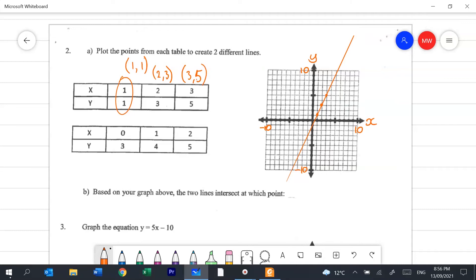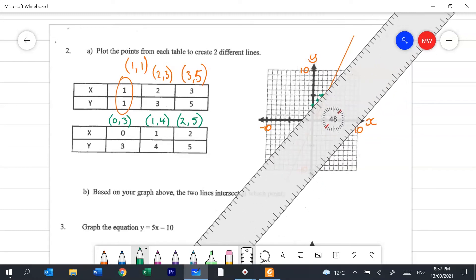Now we want this to be neat because it's going to ask us to find the point of interception later. So hopefully I've managed to get that neat enough. And the second line, if I do this one in green, this one has the points 0, 3, 1, 4. With practice you'll just see these points in these tables and you won't have to write it out like this. But we've got 0, 3. We've got across 1 and up 4. And we've got across 2 and up 5. And neat as we can with our ruler, put a line in.